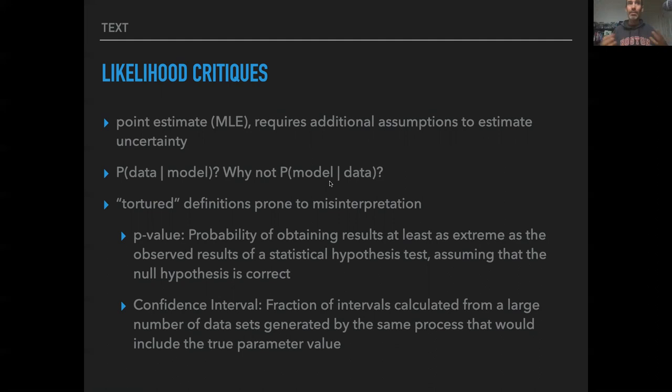So why are we not working with the probability of the model given the data, which in many ways is more intuitively related to what we think we might want. We might want to know what's the probability that this parameter is different from zero? That's kind of what you would intuitively think of when you are asking a hypothesis test about a model. And the fact that the likelihood is not the probability of the model given the data, but instead the probability of the data given the model, leads to a number of kind of tortured definitions that are common in frequentist statistics that are potentially prone to misinterpretation.